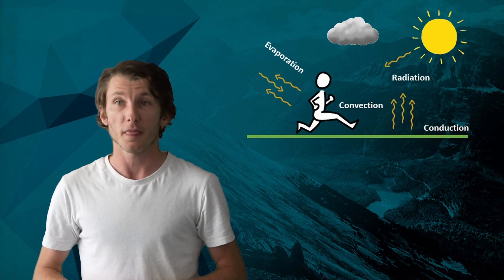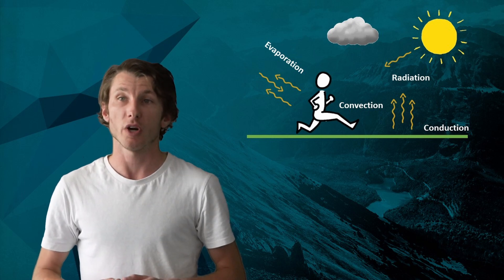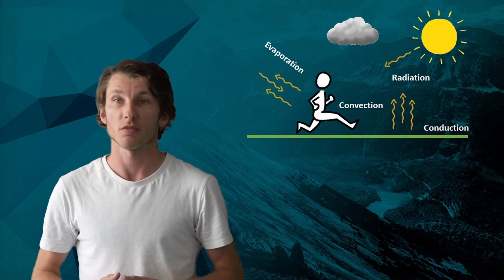Convection is where air or water is moving over your skin. For example, when you're running, the air movement takes away the sweat from your skin.